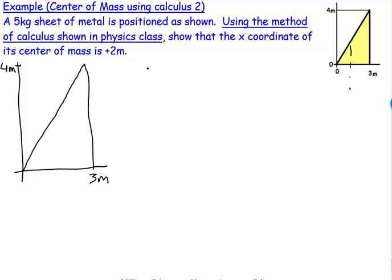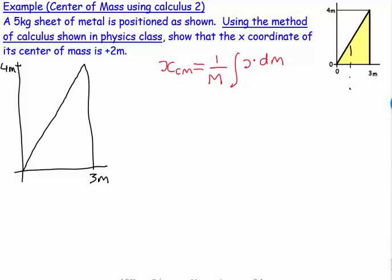Since this is a center of mass problem, we need the equation for center of mass. For a distributed mass — not discrete particles but a continuous shape like a rod, sheet, or cylinder — the equation is x_cm equals one over the total mass times the integral of x dm.